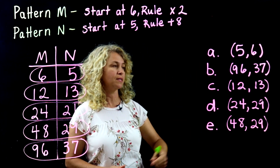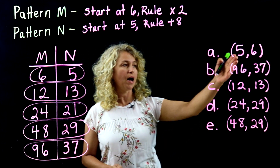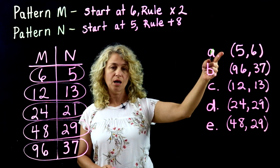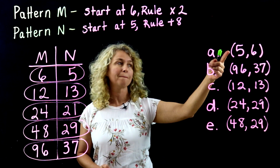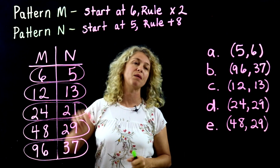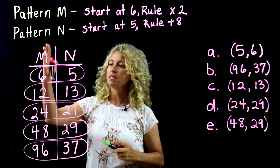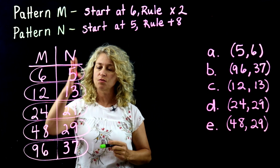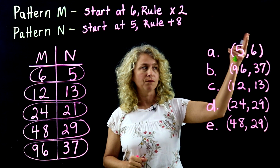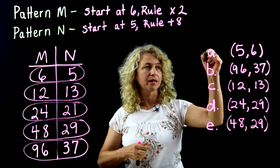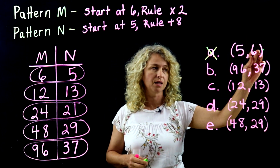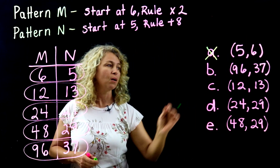Looking at choice (5, 6): a likely student error since they see 5 and 6 together, but the M pattern is X and N is Y, so these are reversed. It would need to be (6, 5) to be correct. So (5, 6) is not an answer.